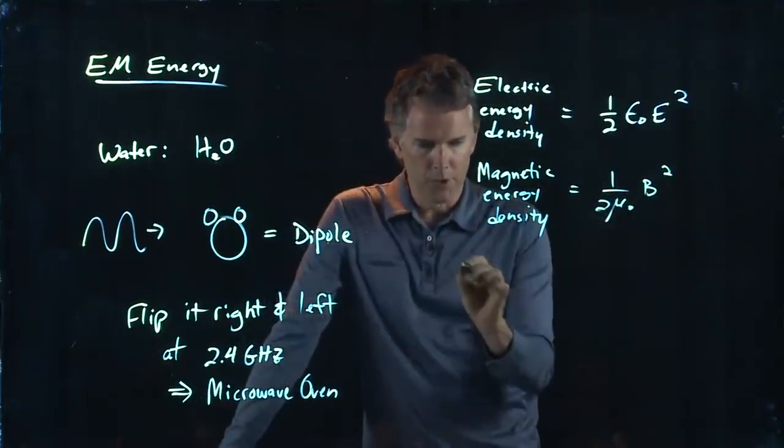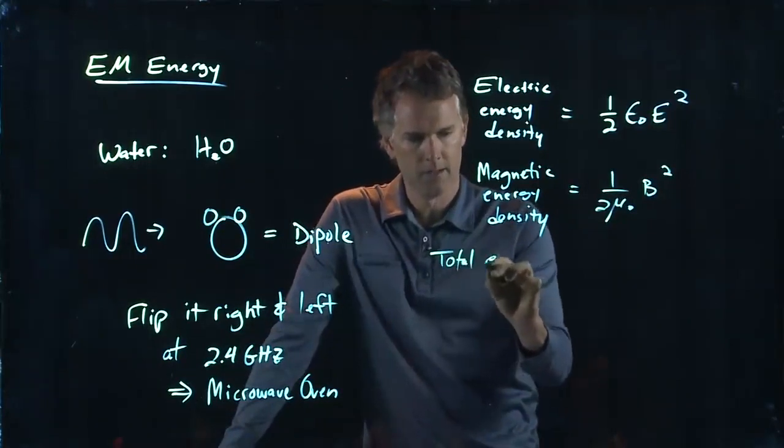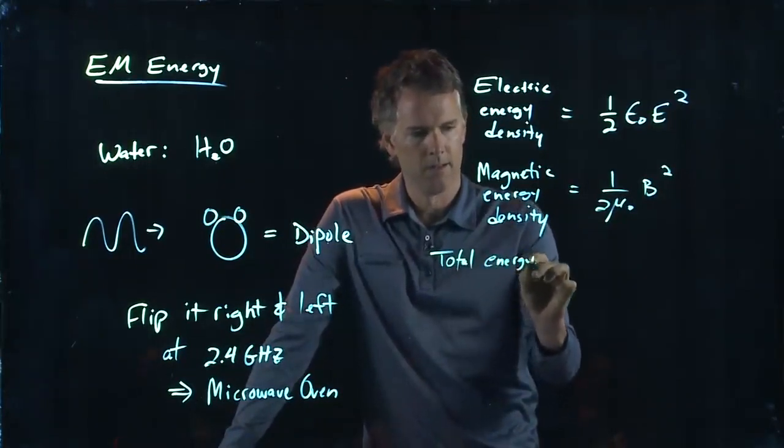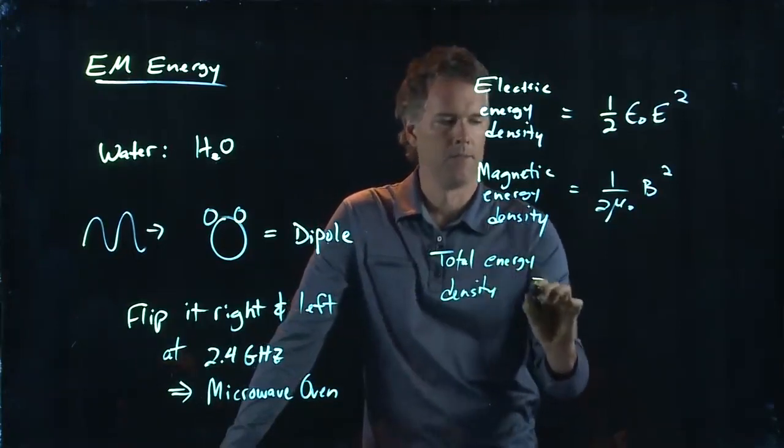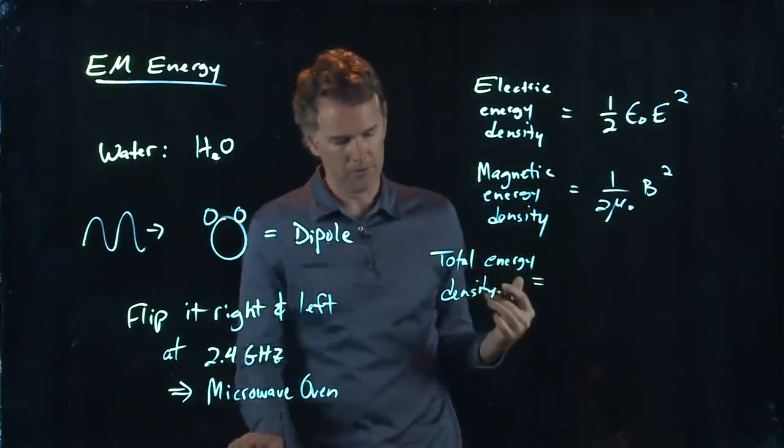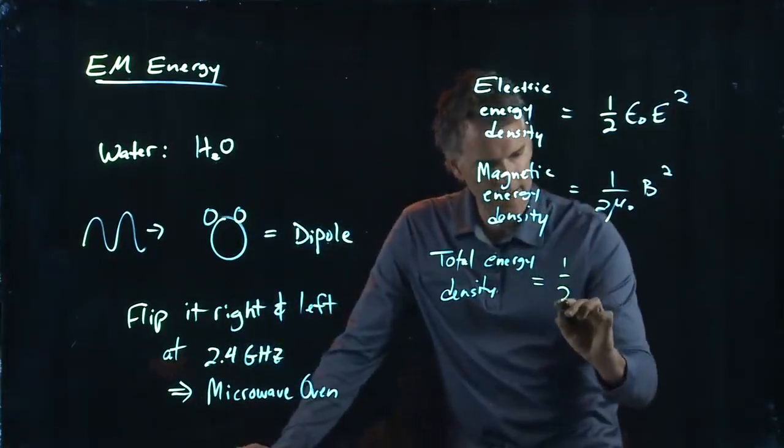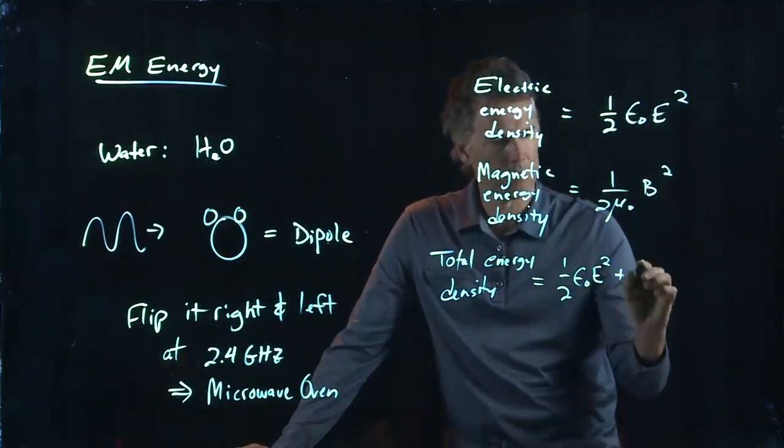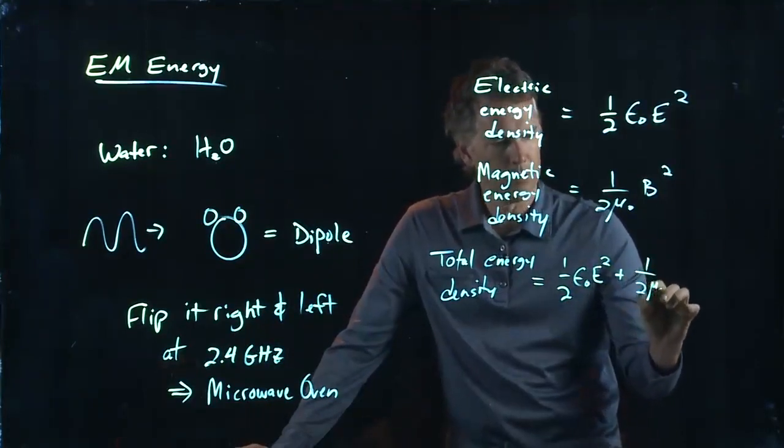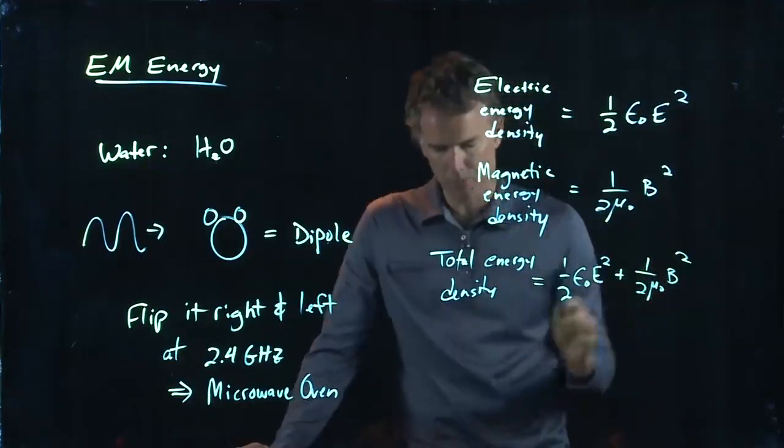And so the total energy density in a wave is just going to be the sum of those two. It's one half epsilon knot E squared plus one over two mu knot B squared.